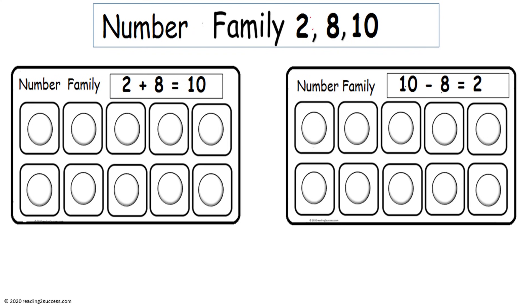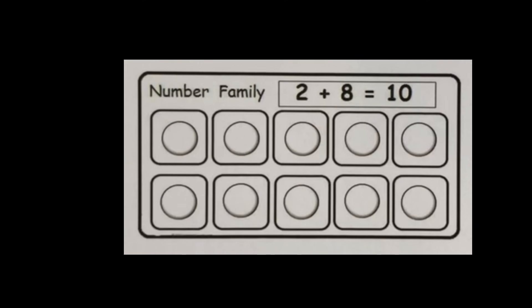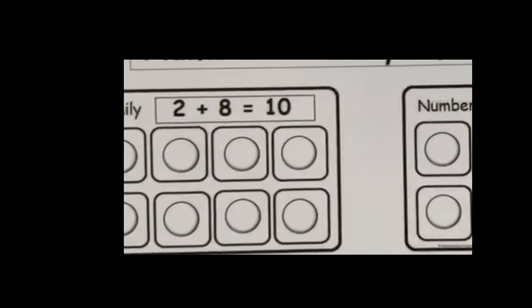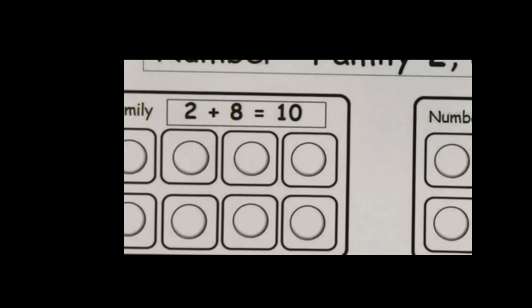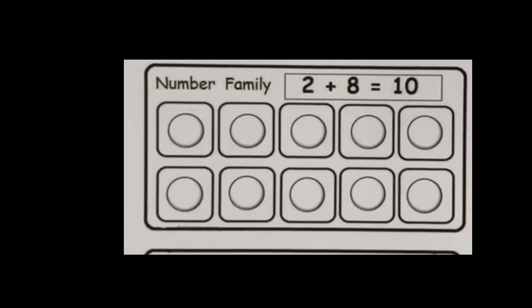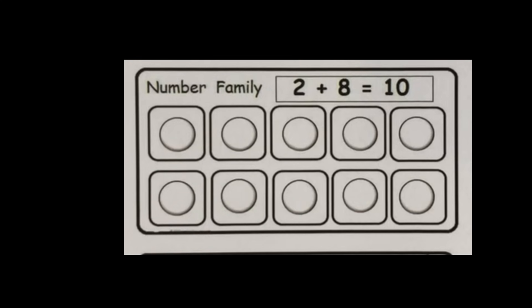Now have kids complete the number family that has the combination numbers of 2, 8, and 10. It's time to have kids complete a base 10 frame activity with the number family 2, 8, and 10. Pick any two colors — crayons or felt pens.